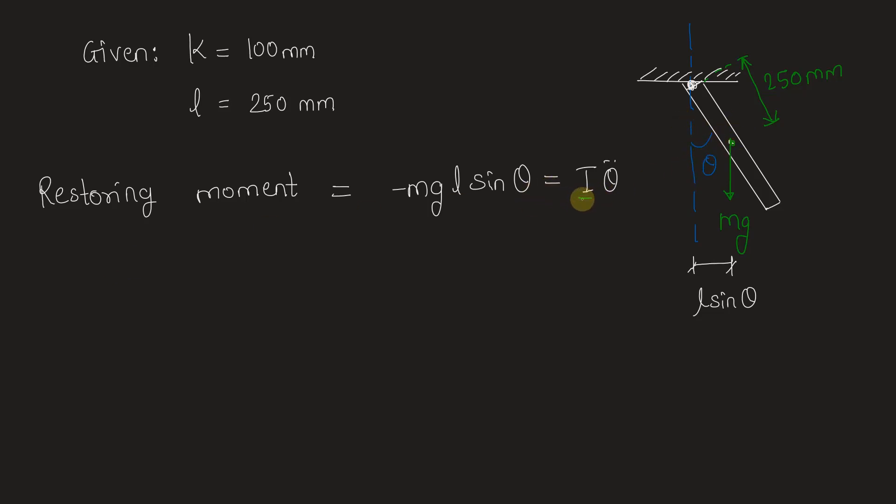Now here mass moment of inertia I for this bar will be given as mass of the bar into square of radius of gyration. Hence we have I equal to mk².